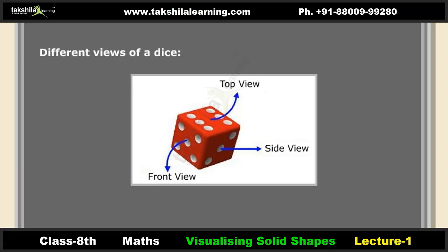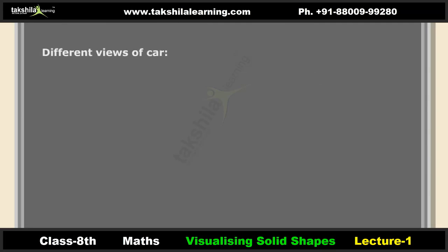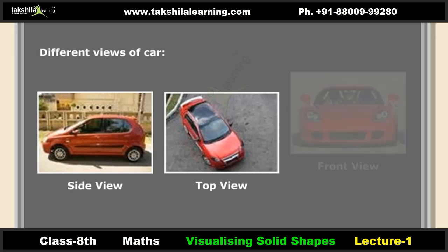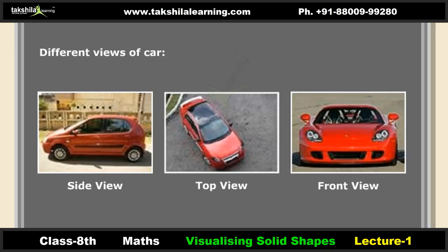Different views of a dice include the side view, top view, and front view. Similarly, different views of a car include the side view, top view, and front view.